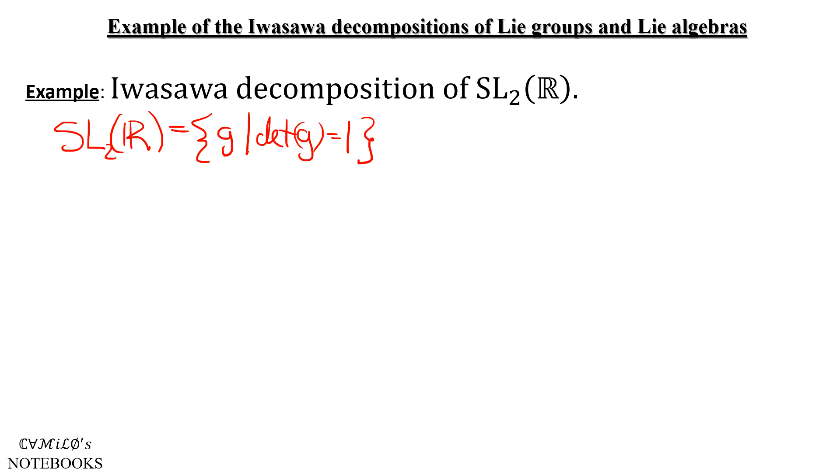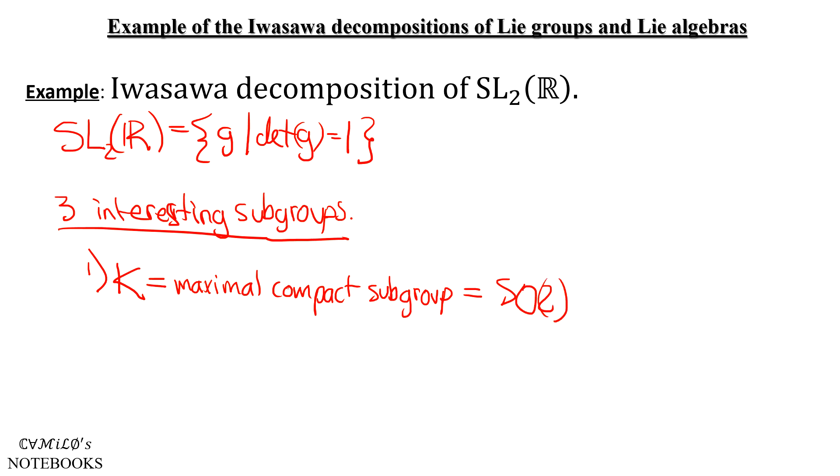We have three interesting subgroups. Our first one, we'll call it K, is going to be our maximal compact subgroup, which for our case is going to be SO(2), the group of two-dimensional rotations, rotations of the plane, that they look like this. Theta can be a real number, vary from 0 to 2π, doesn't really matter. Just note that the determinant is of course 1 of every matrix in there.